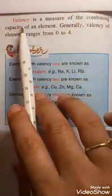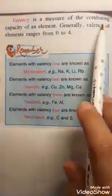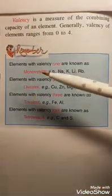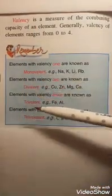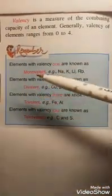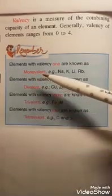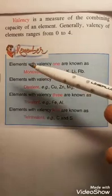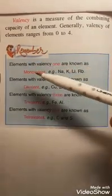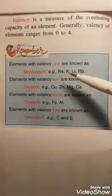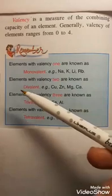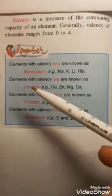On the basis of valency or the combining capacity of an element, the elements are divided into four types: monovalent, divalent, trivalent, and tetravalent. Mono means one, di means two, tri means three, tetra means four — all referring to valency. Elements with valency one are known as monovalent. Examples include sodium, potassium, lithium, and rubidium.